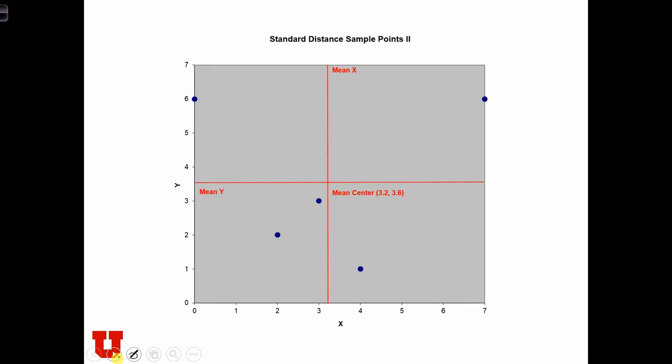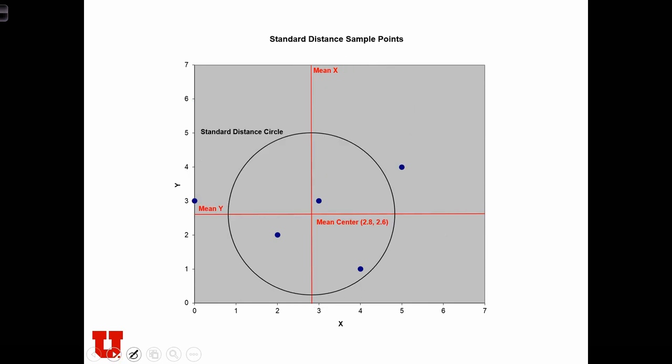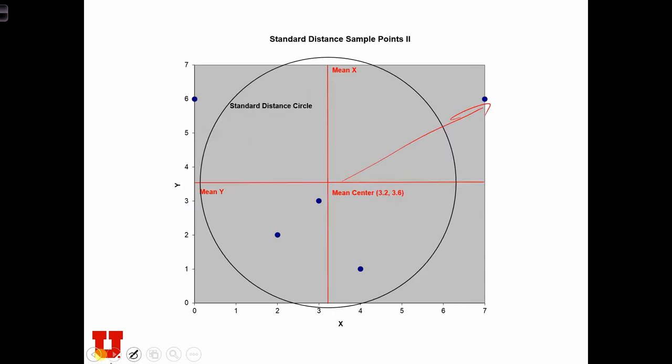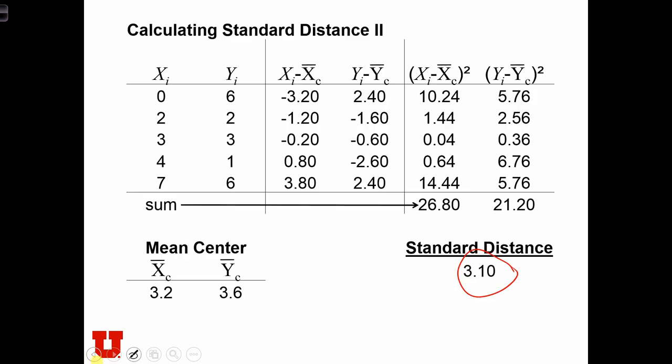Now, if we were to draw the circle around, the standard distance circle around the mean center, we see that it's a circle with a much larger radius. And that's because, on average, points are farther away than they were before from the mean center. Going back to the original case, here's the mean center with a standard distance of 2, and here's the standard distance of 3.2.